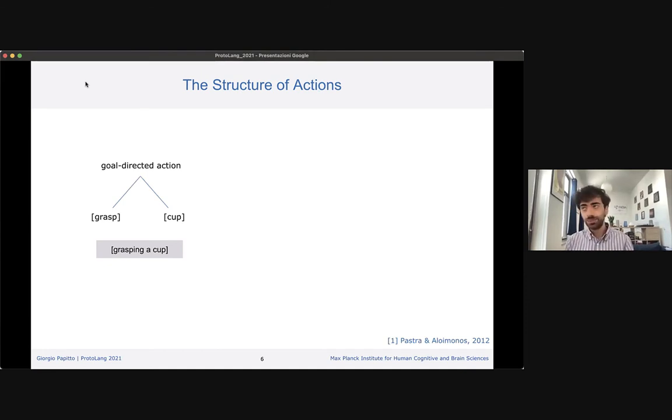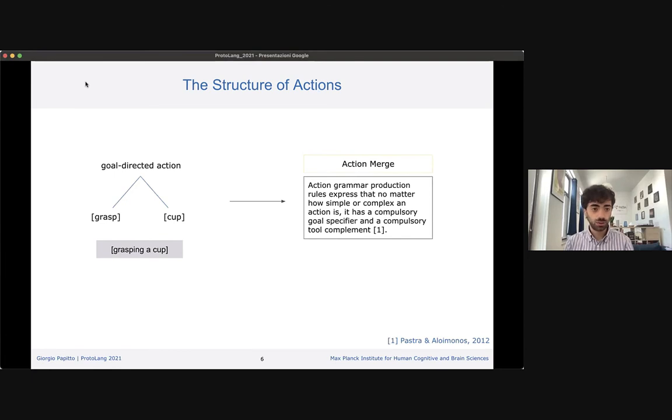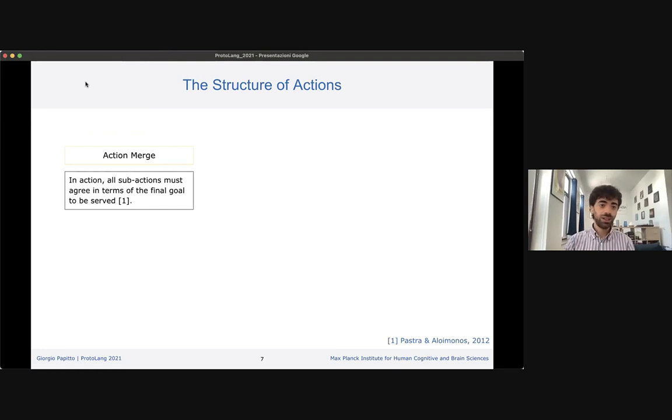It is indeed complex to find parallels of merge in the action domain or hierarchical reapplication of merge. One attempt was made by Pastra and Aloimonos. They claimed that following action grammar production rules, an action is composed by a goal and a tool, which would form something parallel to language. They also claimed, interestingly, that all actions are composed by sub-actions and all sub-actions must agree in terms of the final goal to be served.